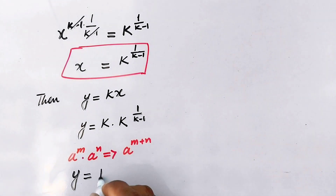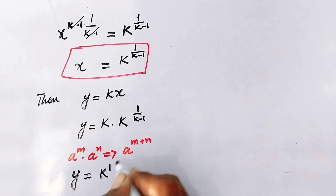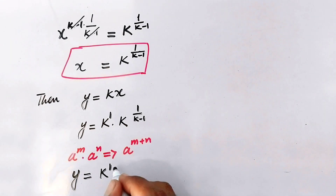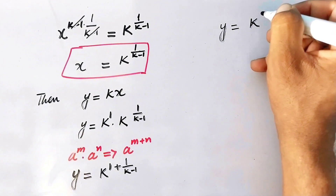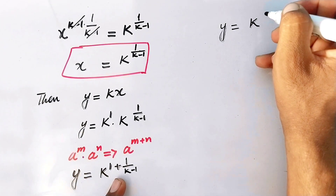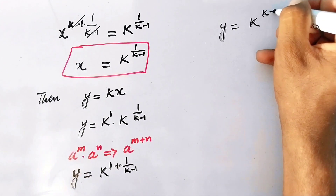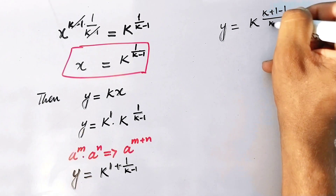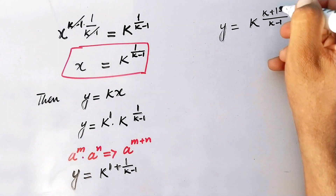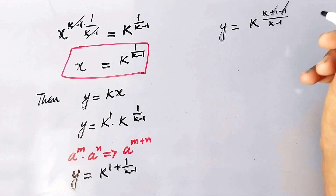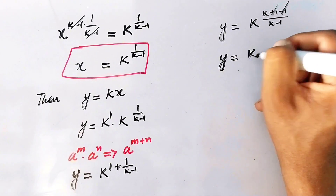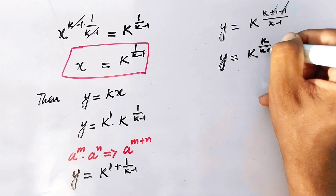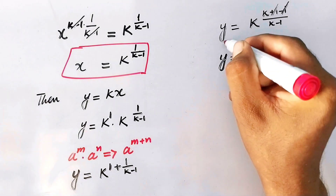So we can write y equal to k raised to the power 1 plus 1 over k minus 1. By adding these values, y is equal to k raised to power k over k minus 1, and that is the value of y.